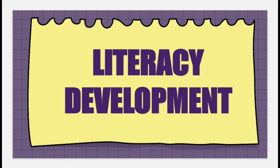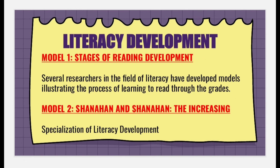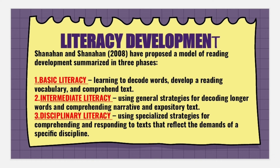On literacy development, there are two models presented. The first is the model stage of reading development, where several researchers in the field of literacy have developed models illustrating the process of learning to read through the grades. The second model is Shanahan and Shanahan's increasing specialization of literacy development, proposed in 2008, summarized in three stages.